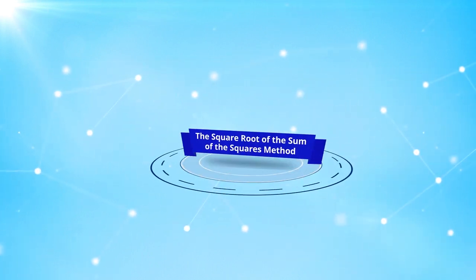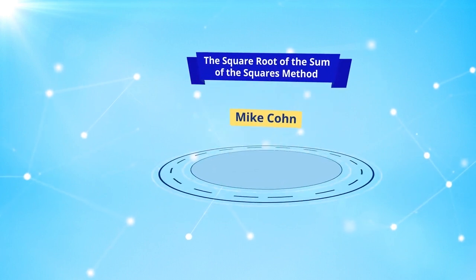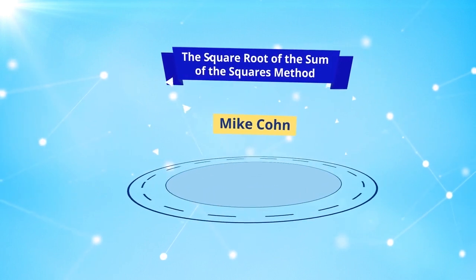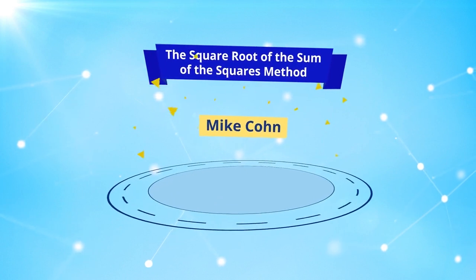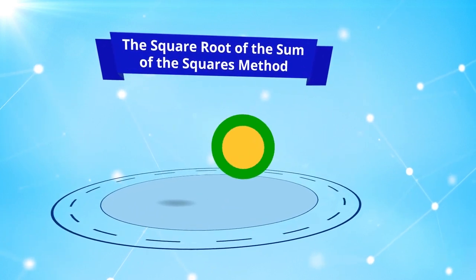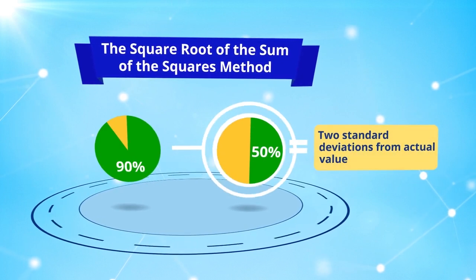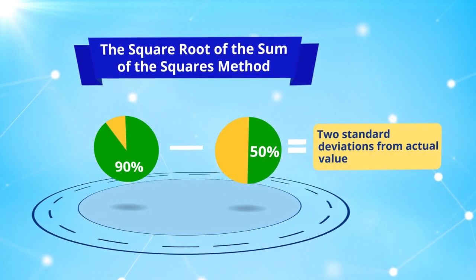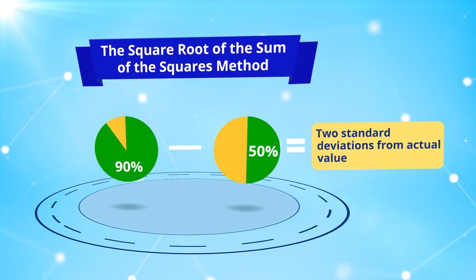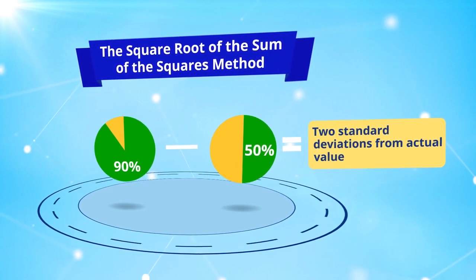The square root of the sum of the squares method was developed by Mike Cohn and is often more accurate than the critical chain method, especially for agile projects. This method assumes that the difference between the 50% and 90% confidence estimates for a task is approximately two standard deviations from the actual value.